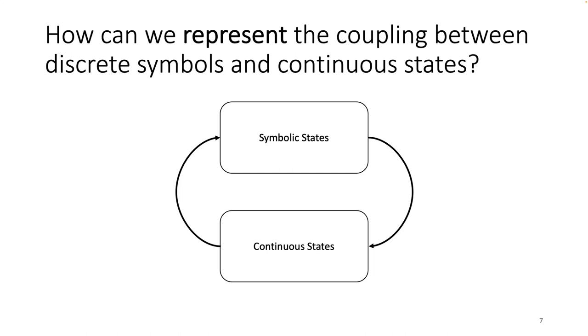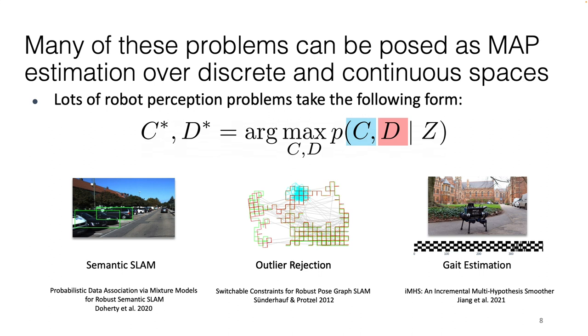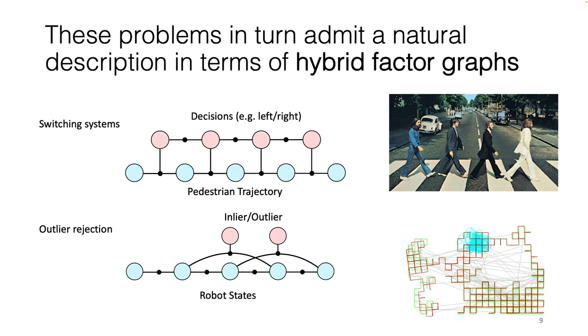So the big open question for us is, how can we represent the coupling between discrete symbols and continuous states? And lots of previous work is based on the observation that many of these problems can be approached as maximization of the posterior probability of a set of continuous and discrete variables given a set of measurements z.